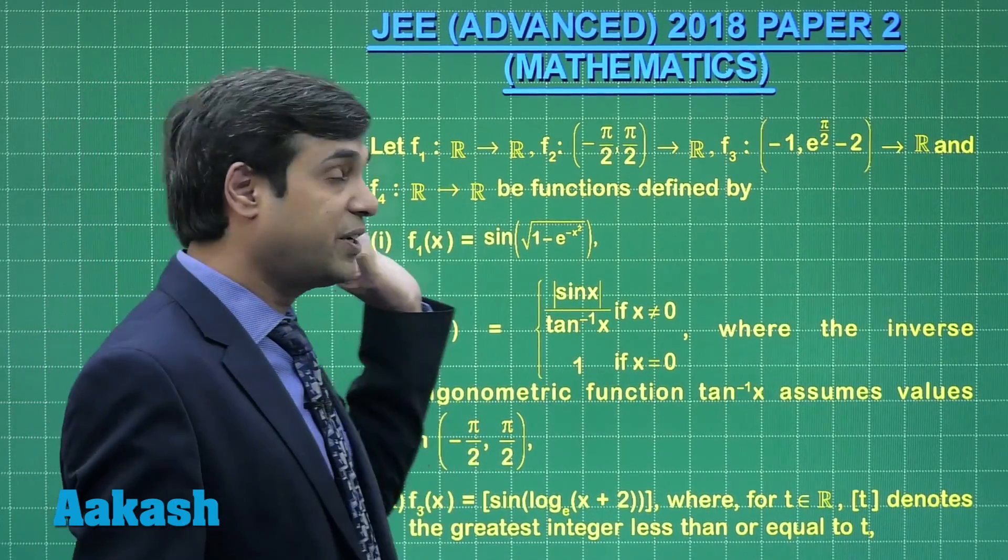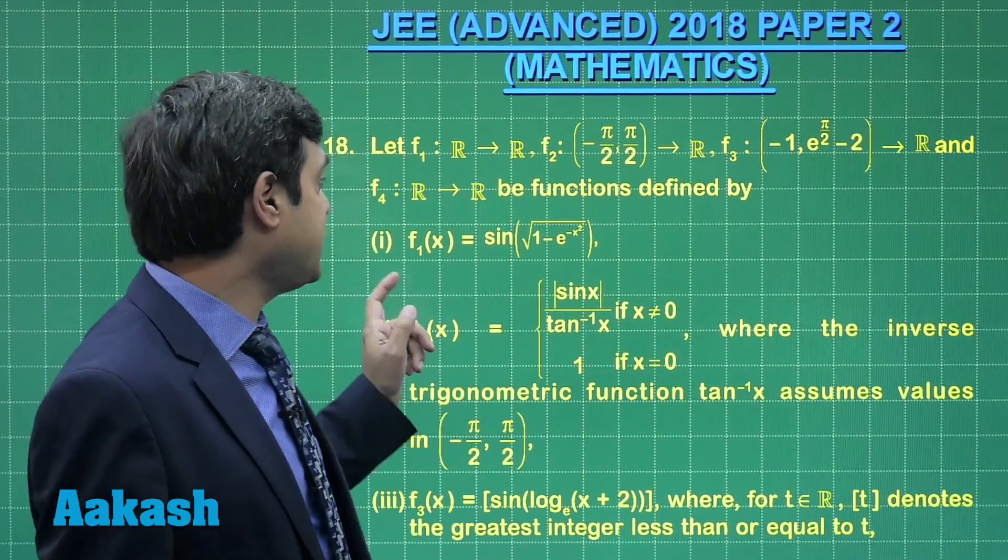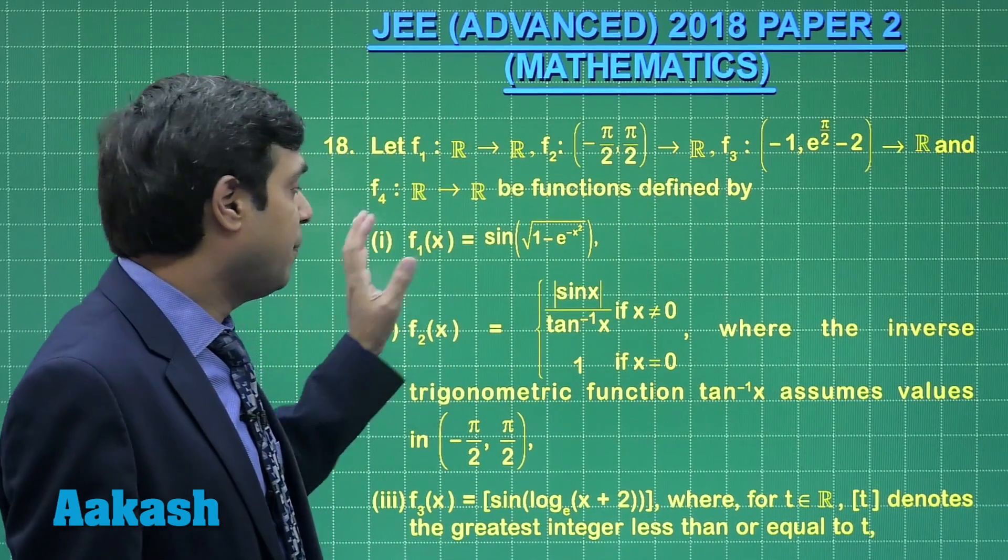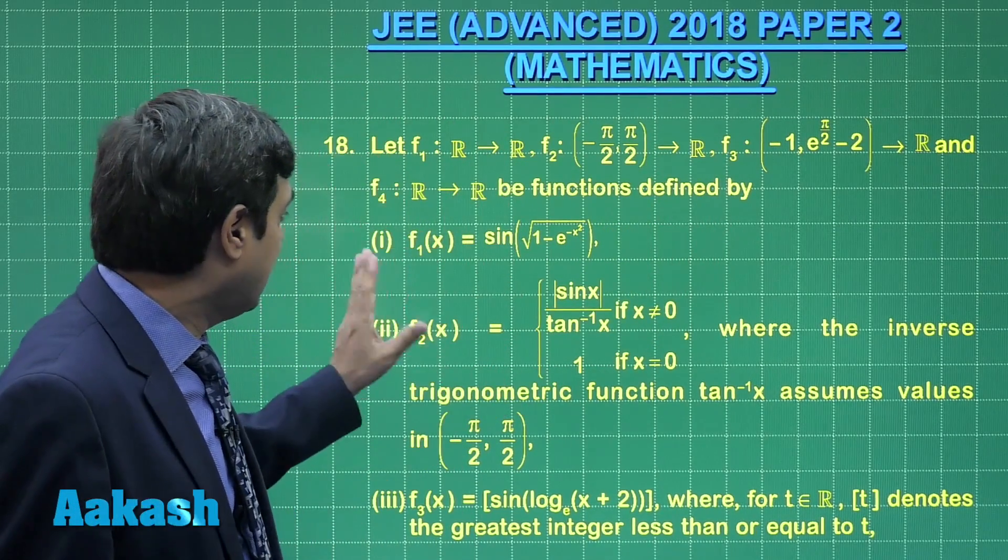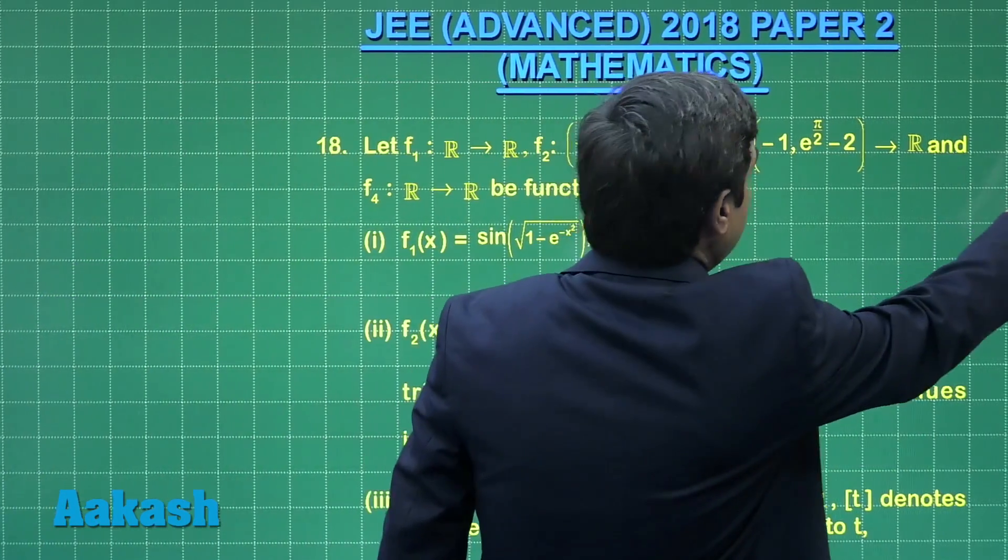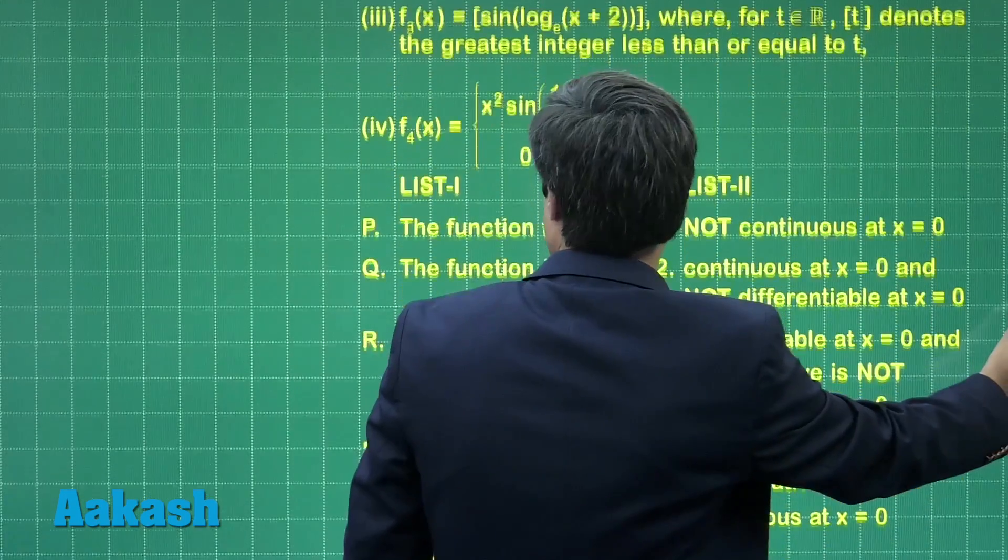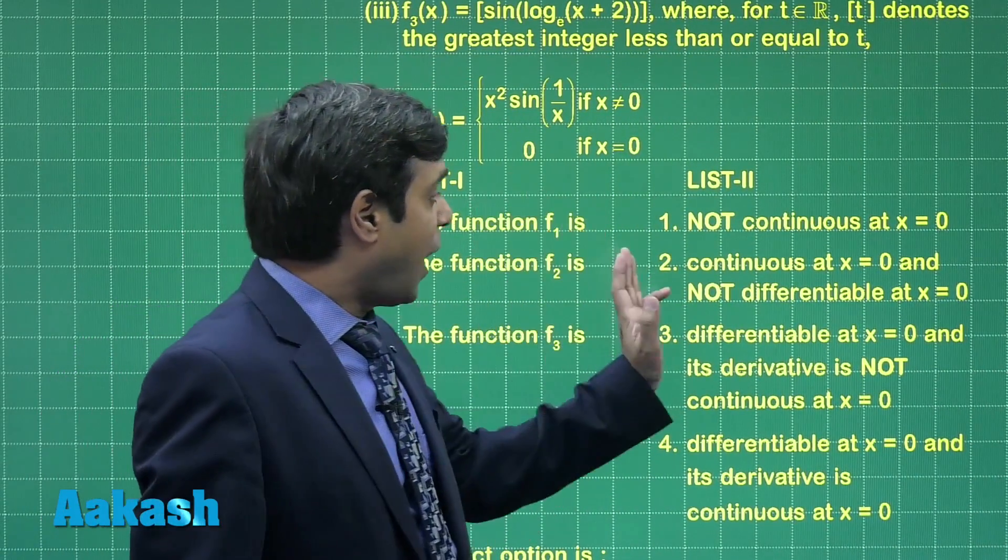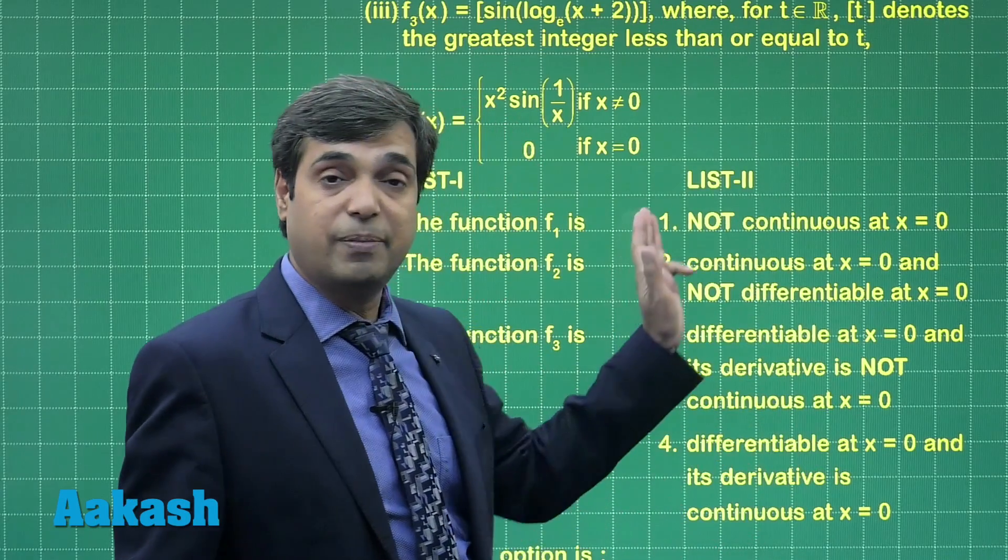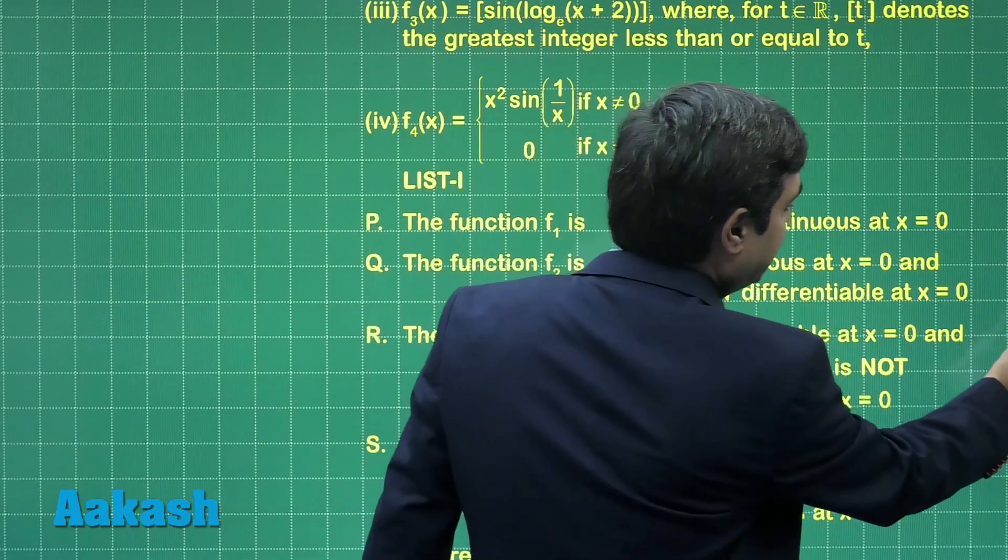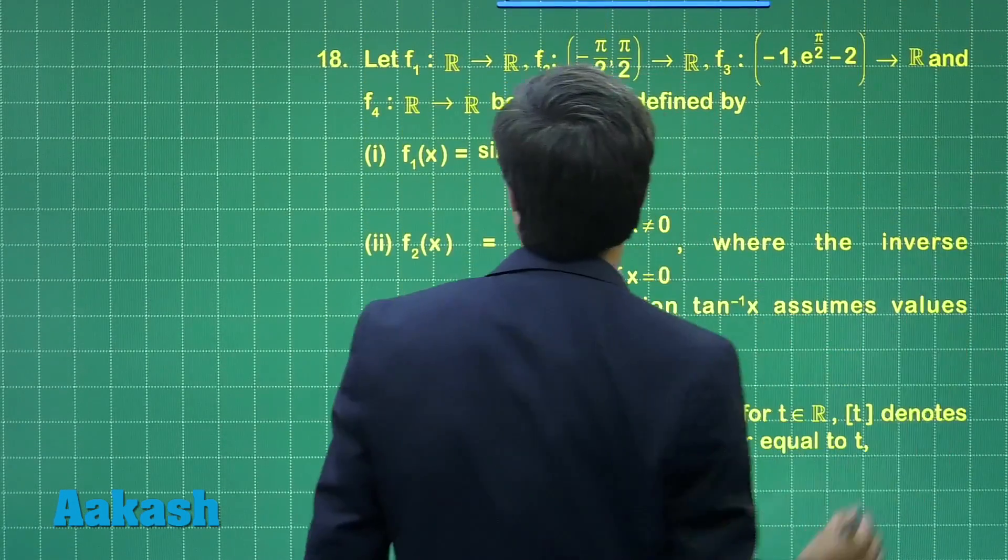Let us consider the last question of this paper 2, that is question number 18. Let f1, f2, f3, f4 be 4 functions defined like f1(x) and f2(x) and so on. Based on these functions, the question is talking about the function f1, f2, f3, f4 are whether continuous, differentiable or not at x equals 0. Let us start this question by considering functions one by one.